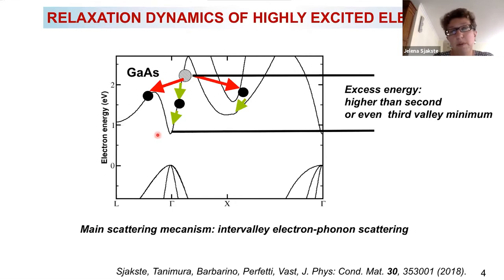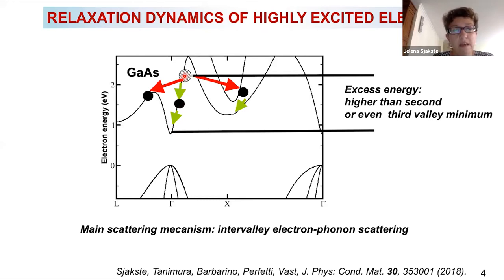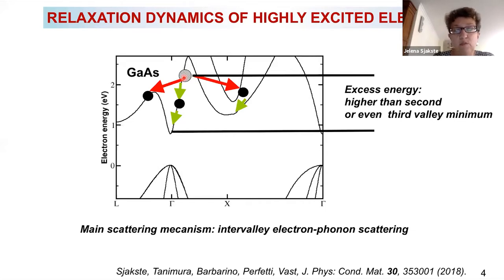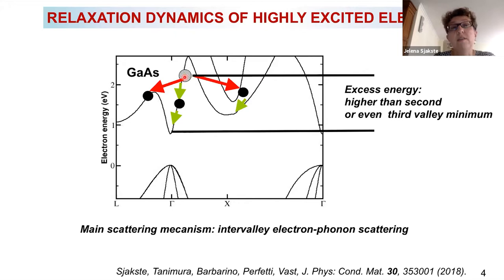Here I show the typical band structure of a semiconductor. The case is gallium arsenide. Let us say we excited an electron with a laser above the second or even the third minimum of the conduction band — this is what I would call highly excited. In that case, the main electron-phonon scattering channel for this electron will be intervalley electron-phonon scattering, scattering with short-wavelength phonons with large Q vector, even in the case when the semiconductor is a polar one.